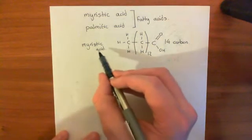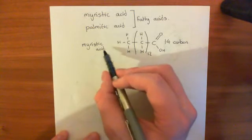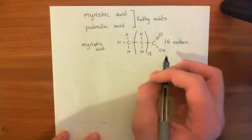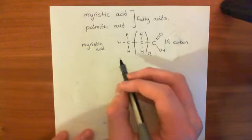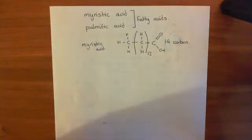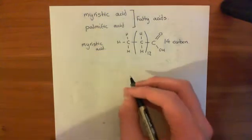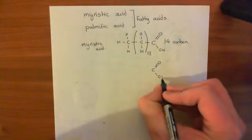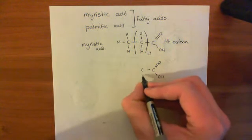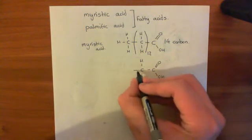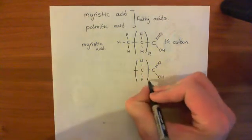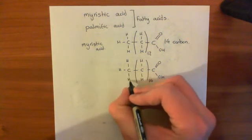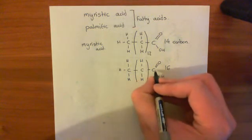Myristic acid is the old name — biochemists use it, though chemists would use tetradecanoic acid. But myristic acid is still pervasive in biochemistry so we'll use that. Palmitic acid is the old name for the 16-carbon carboxylic acid. Using the same trick, we've got 14 methylene groups this time, then the methyl group on the end, giving us a 16-carbon carboxylic acid overall.